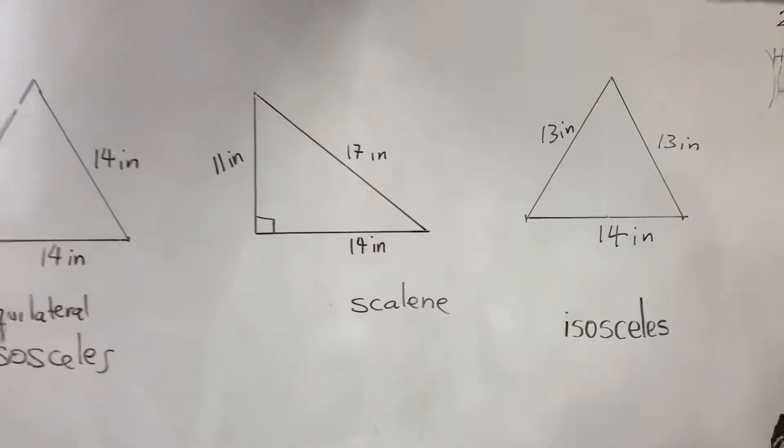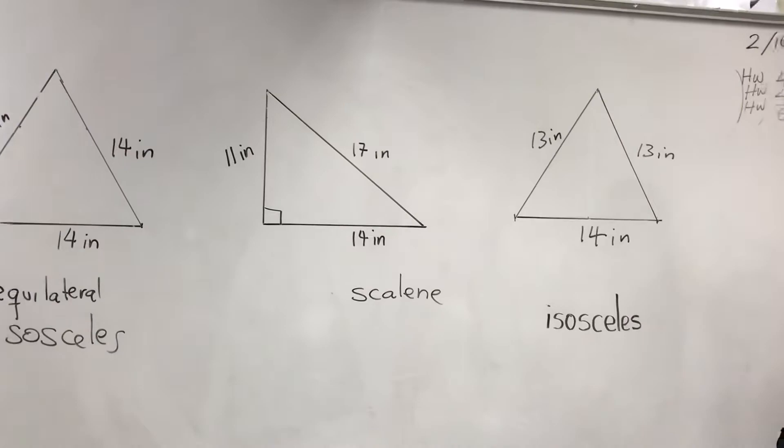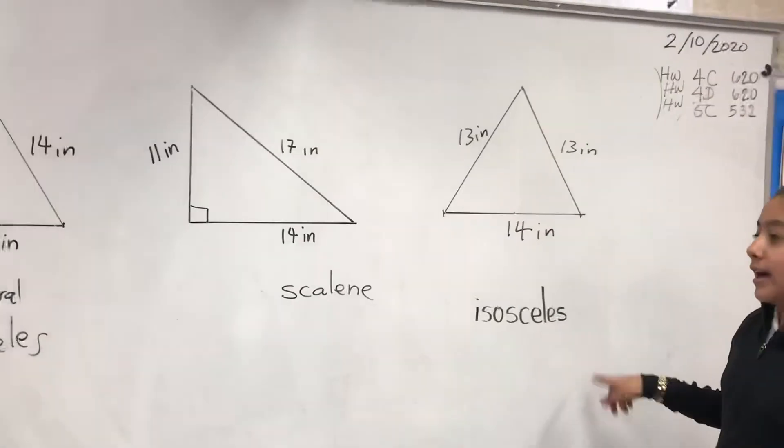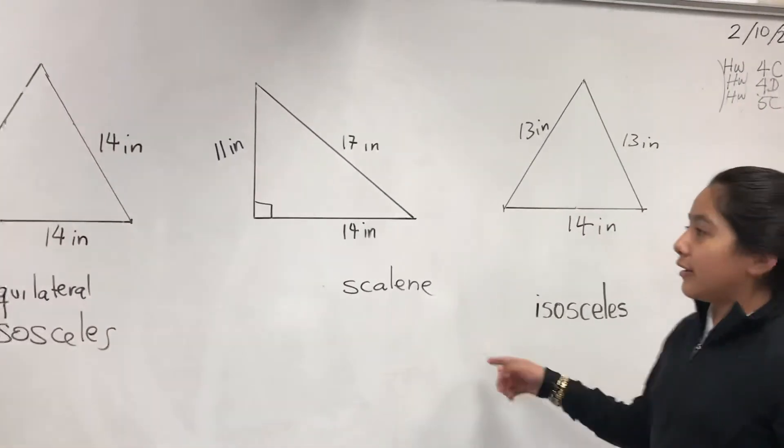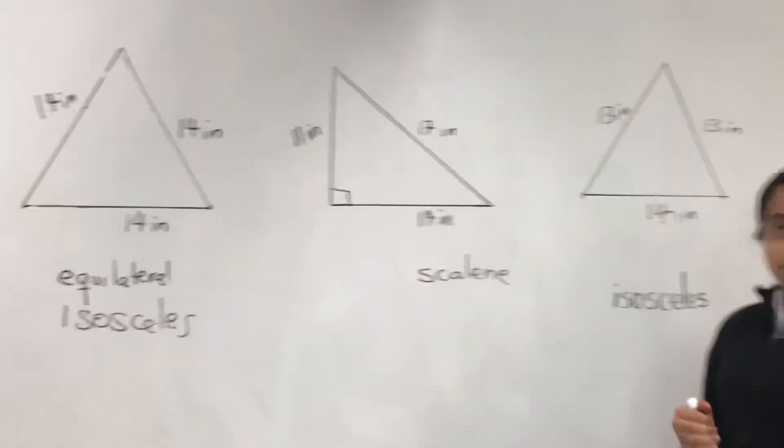So from these three triangles, what can you say about these three? There are two isosceles triangles. Two isosceles.